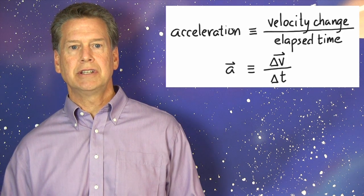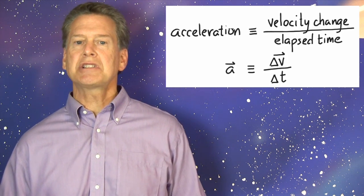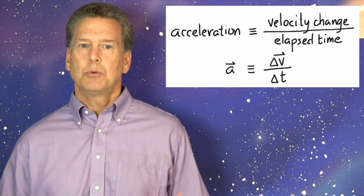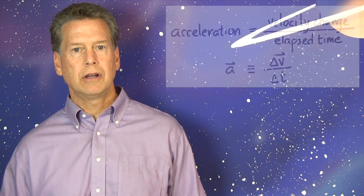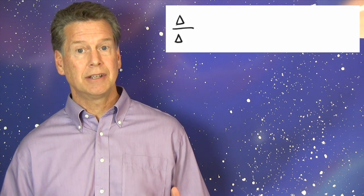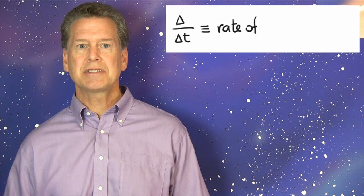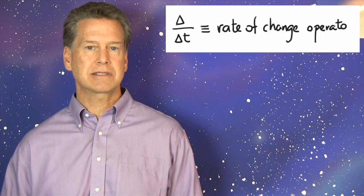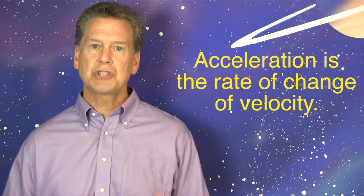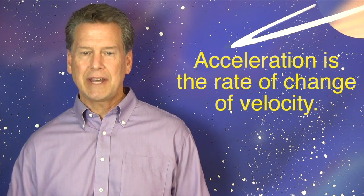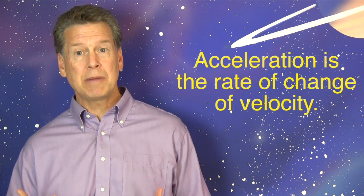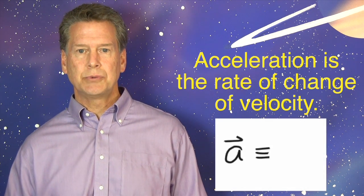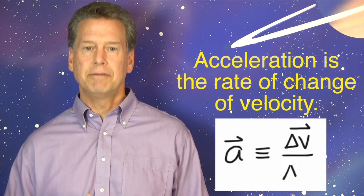Before applying this definition in several examples, let's just explore it a bit. We've seen this mathematical structure before, delta something divided by delta t. This is the rate of change operator that we saw in RP6. This definition of acceleration is telling us that acceleration is the rate of change of velocity. That's very helpful. Remember this. Acceleration is the rate of change of velocity.